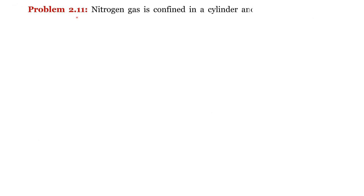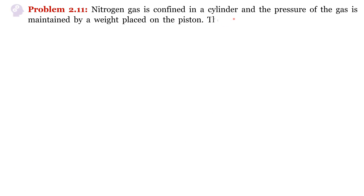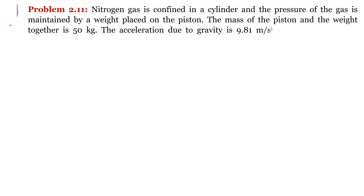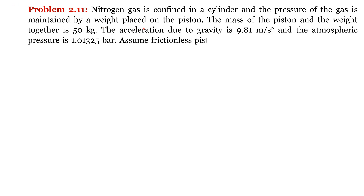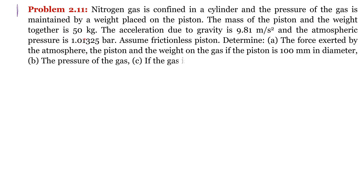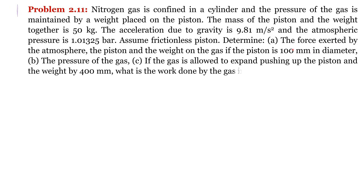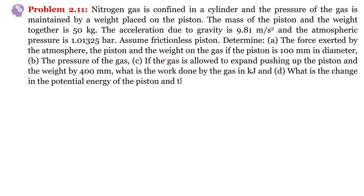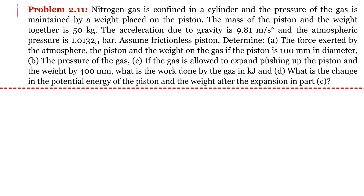Problem 2.11: Nitrogen gas is confined in a cylinder and the pressure of the gas is maintained by a weight placed on the piston. The mass of the piston and weight together is 50 kg. We need to find the force exerted by the atmosphere as well as the piston and weight on the gas. The dimension of the piston is also given. In part B we find the gas pressure, and in part C the work done by the gas as it expands, and in part D the change in potential energy of the piston and weight.